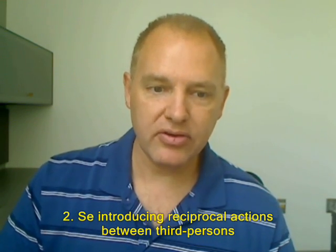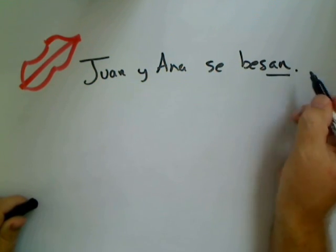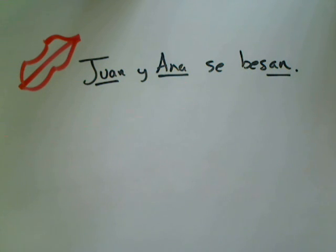That's all I want to say about reflexives — these are just mini-introductions to each use. SE is also used to introduce reciprocal actions involving two or more third-person actors, sometimes called the reciprocal reflexive. This is what we see when two or more people do something to each other. For example, if Juan kisses Ana and she kisses him back, we say JUAN Y ANA SE BESAN — always conjugating in the third-person plural because we have a combined plural subject.